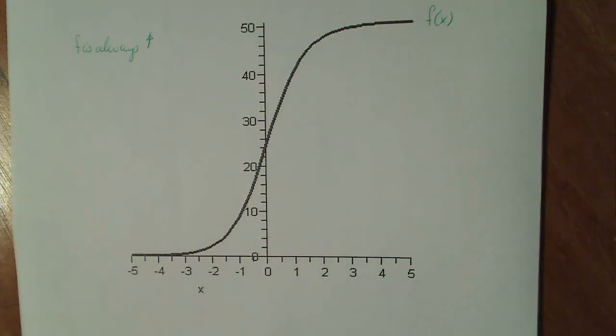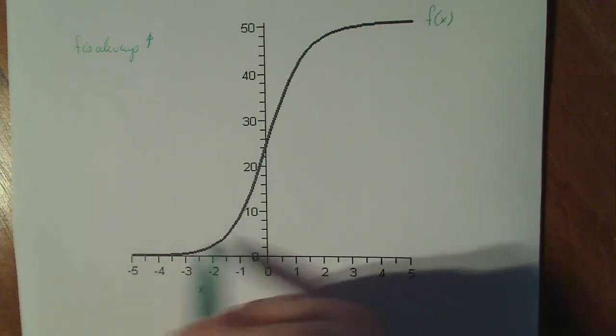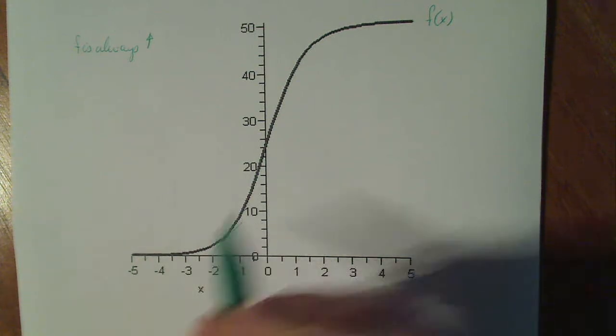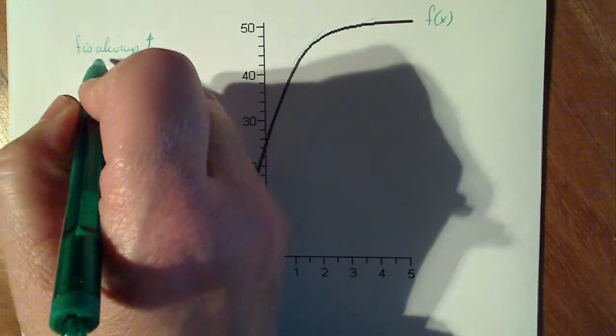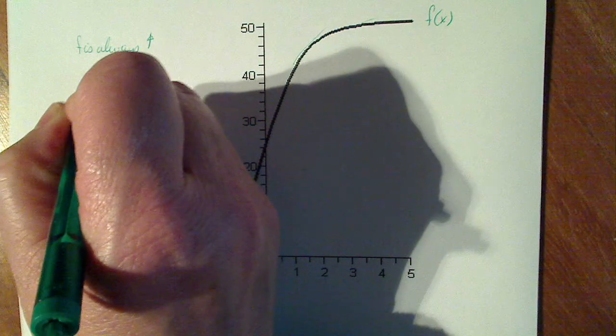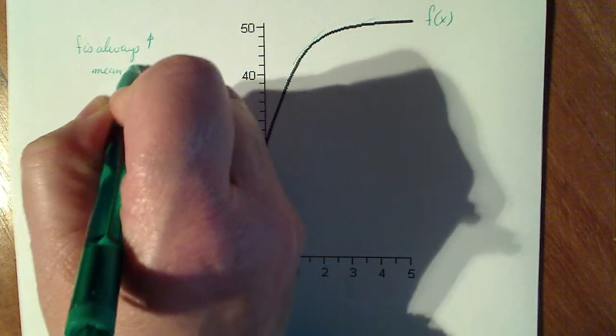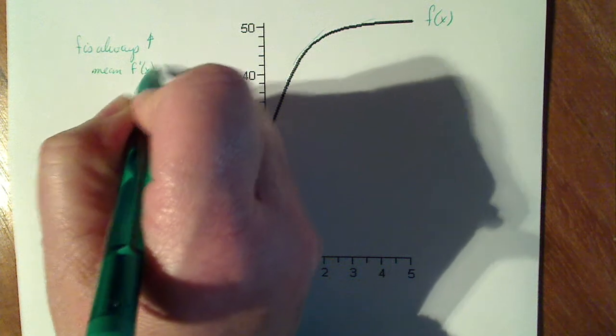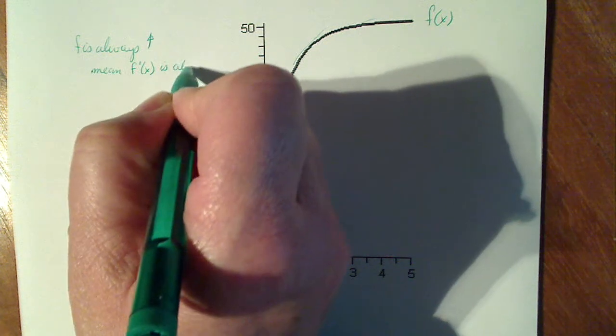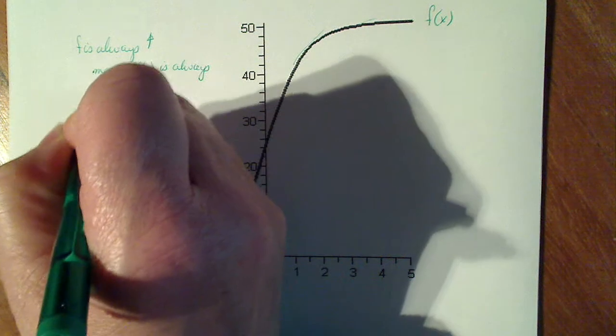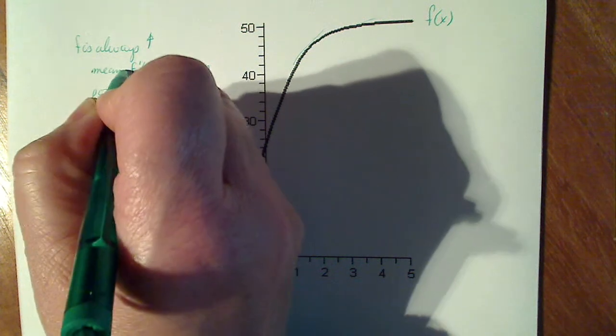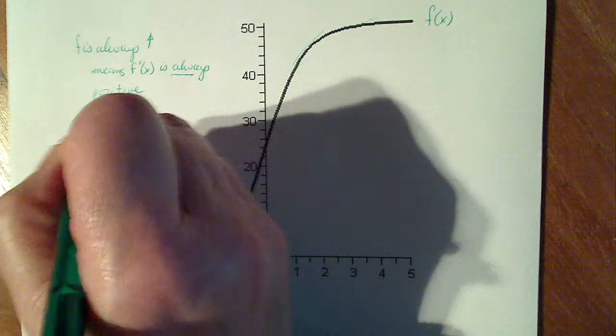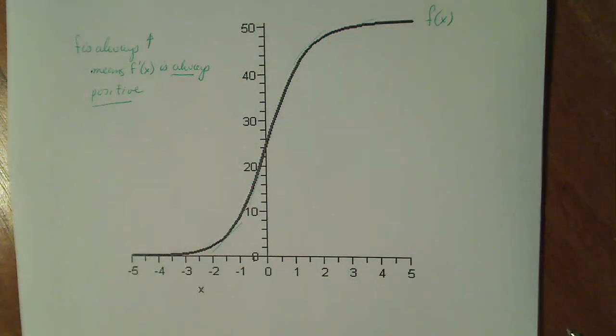So what does that mean about the first derivative? Well, if you just look at it here, you can see that no matter where you draw a tangent line, the slope of that tangent line is always going to be positive. So f is always increasing means f prime of x is always positive. In other words, it's always above the x axis. That's the first thing that I notice.